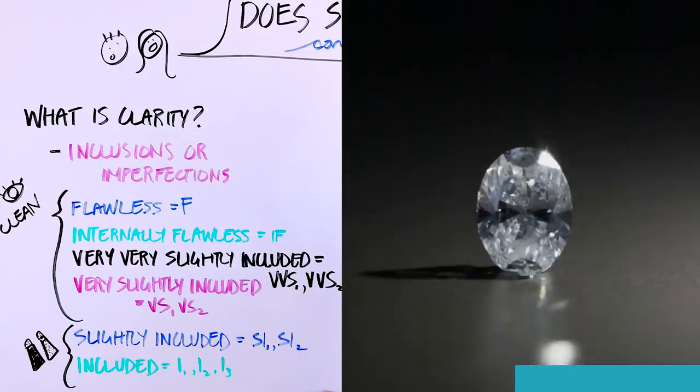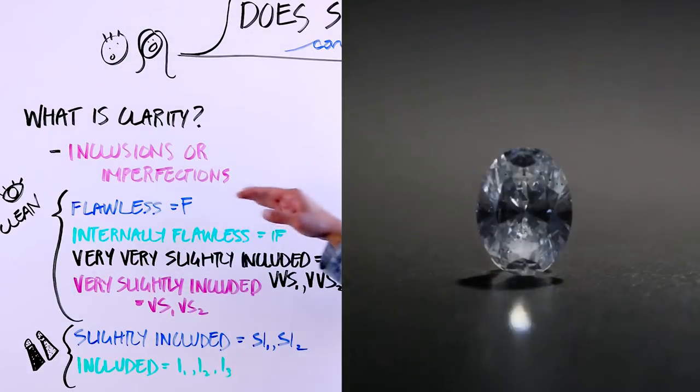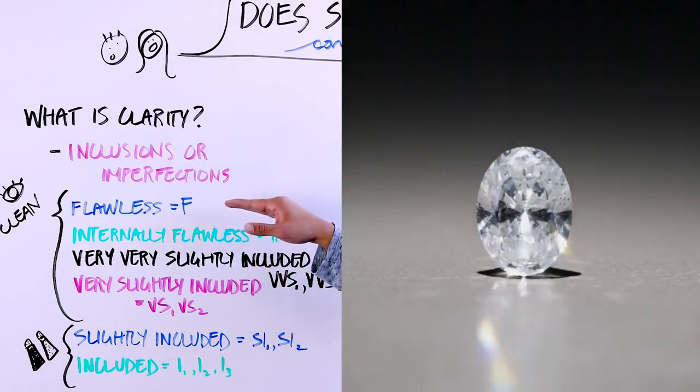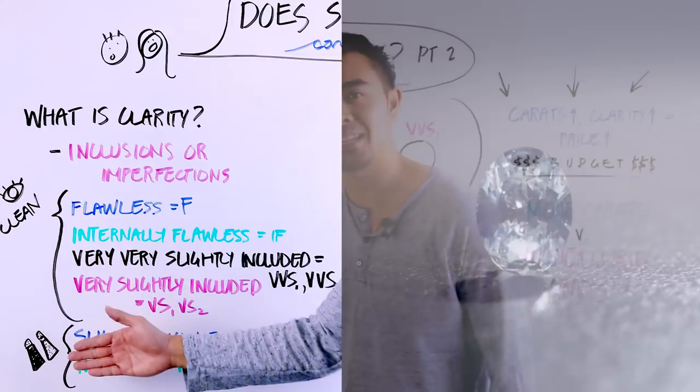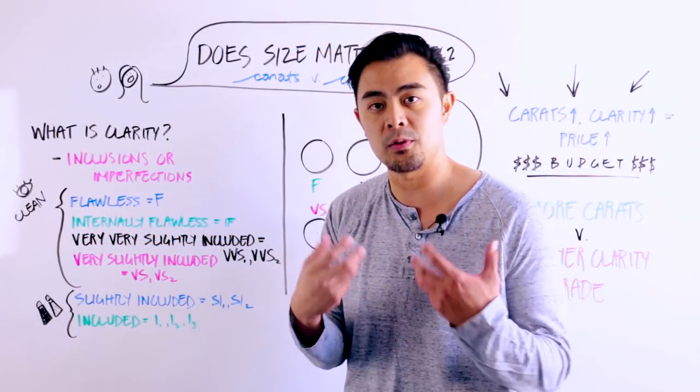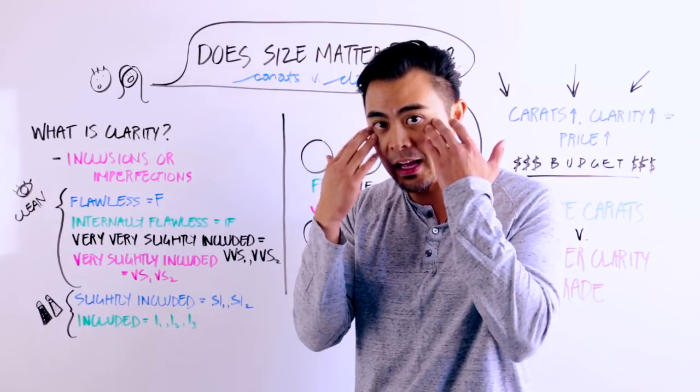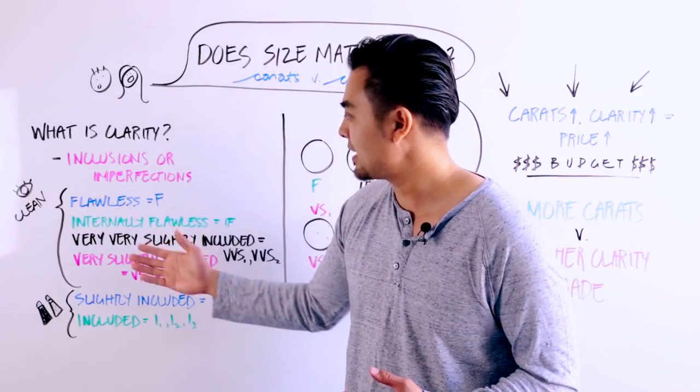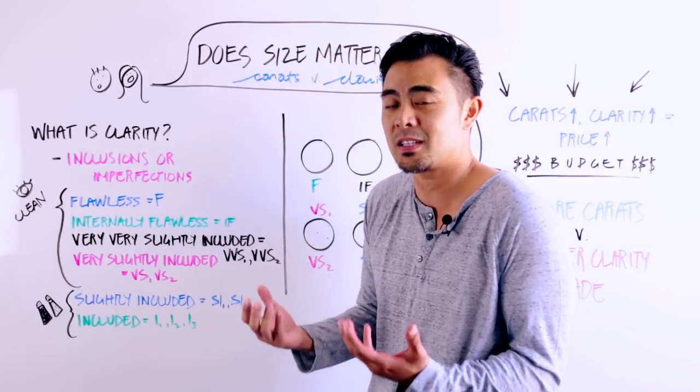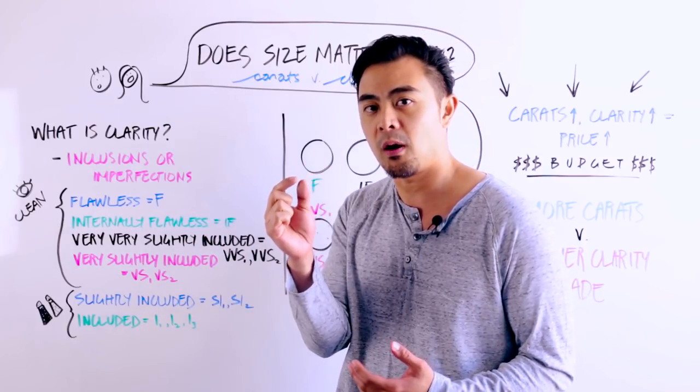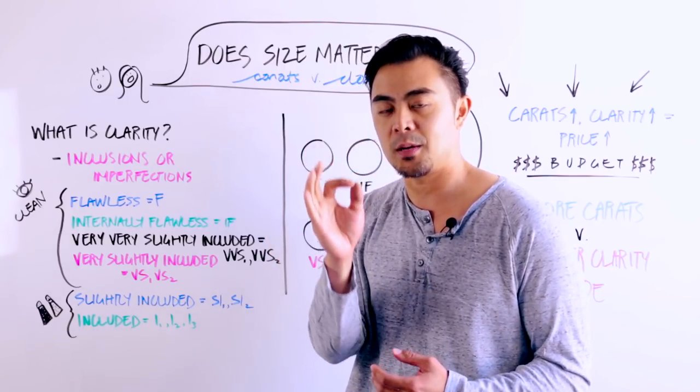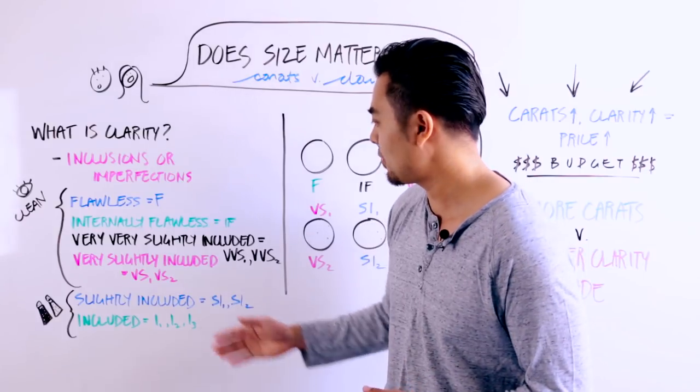So for the most part, not always, but for the most part, between a very slightly included clarity grade to a flawless grade, it's considered eye clean. Basically what that means is that unless you're putting it under a microscope or looking through a jeweler's loupe, you're looking with just your naked eyes. Basically it should look very clean. You shouldn't be able to see the inclusions because these inclusions, again, at the end of the day, gemstones are small. They're measured in millimeters. So the inclusions are just specks. I mean, they're very, very tiny and you can barely see it.